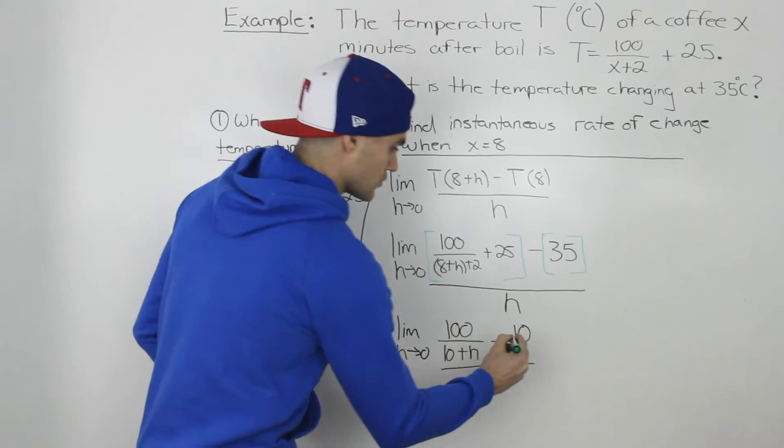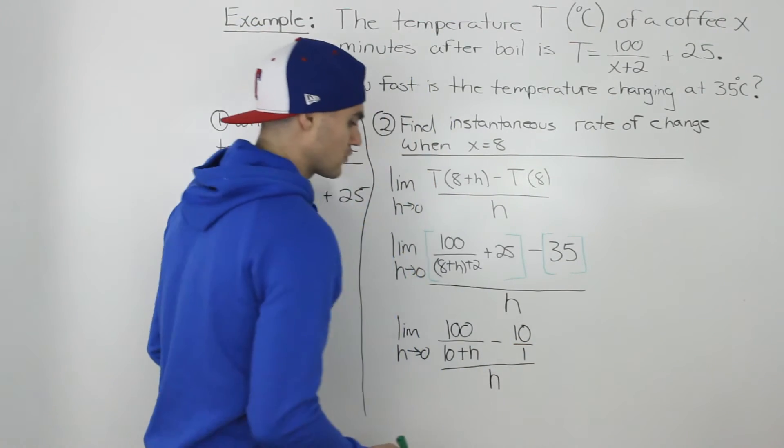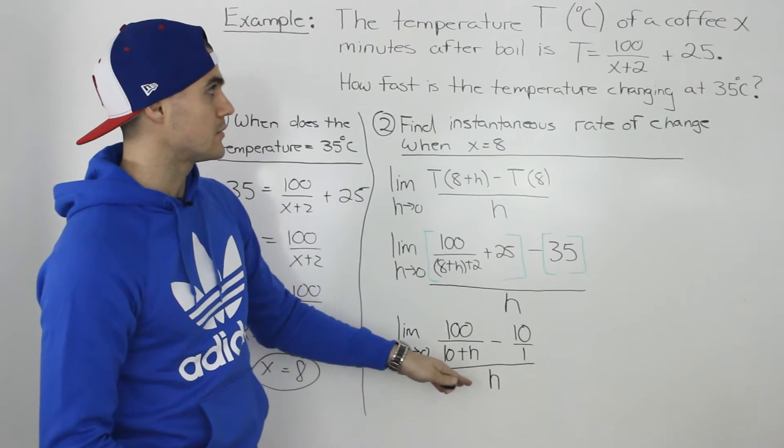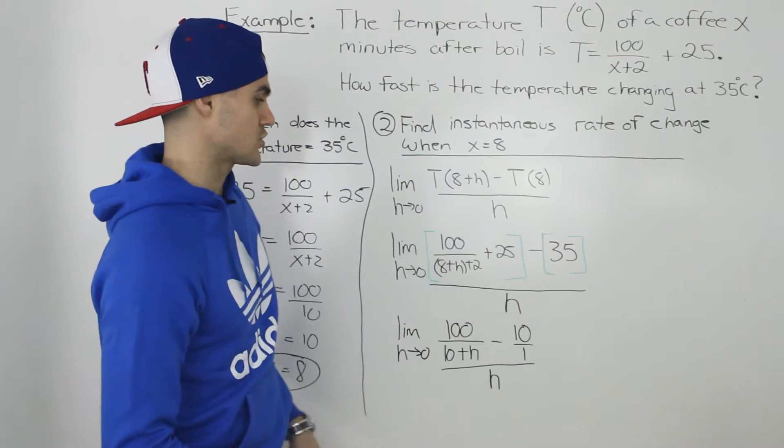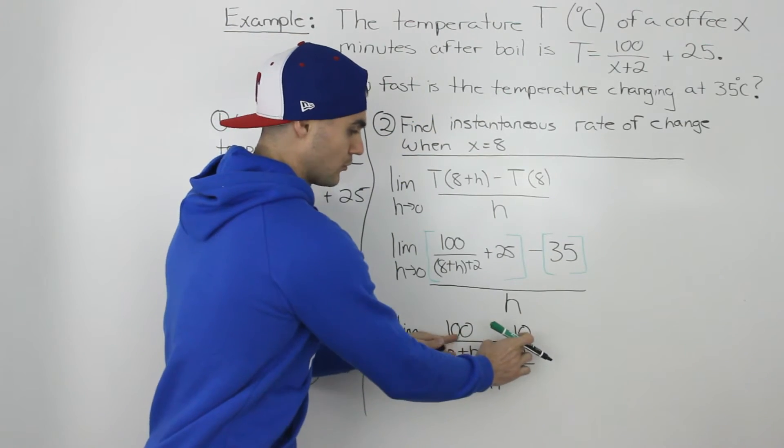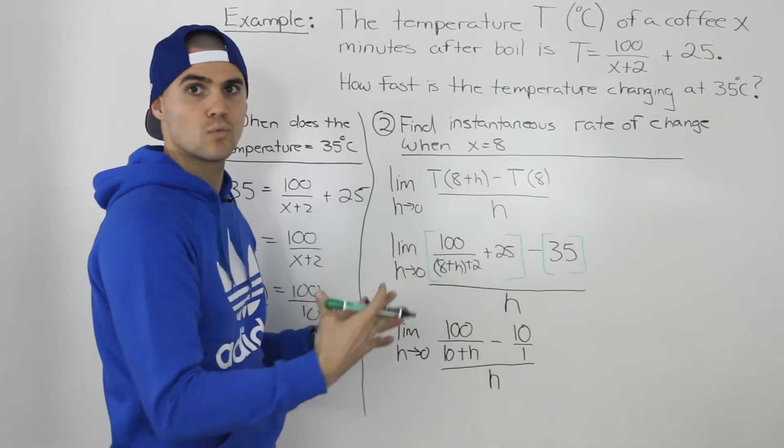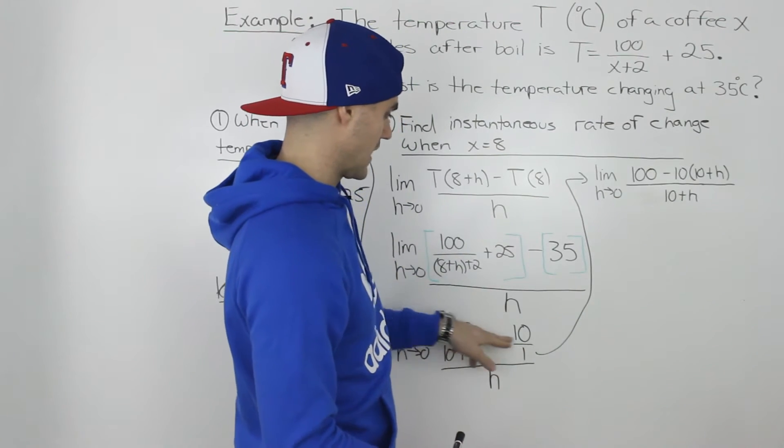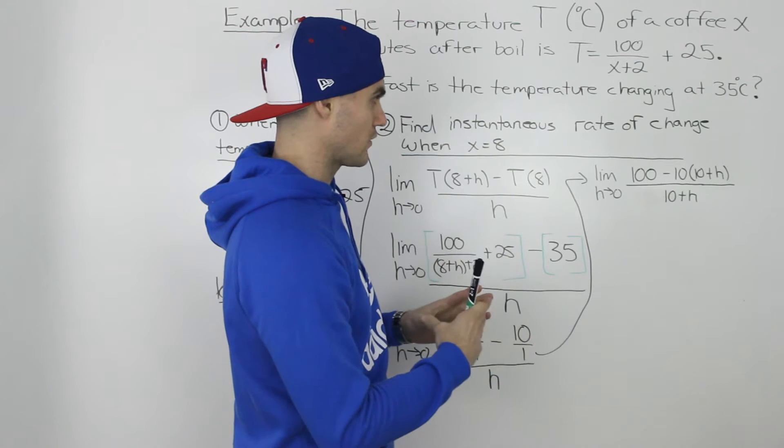Now, to simplify this even further, remember, we have to get rid of this h in the denominator. And because we're dealing with a reciprocal function, what we want to do is we want to take both of these terms and make them into one fraction. So then continuing this up here, we would combine these two expressions into one fraction.